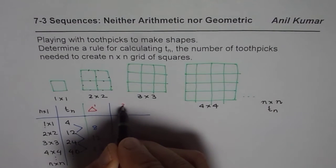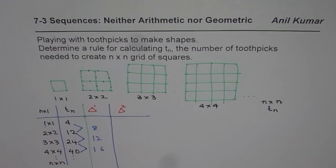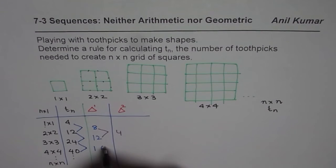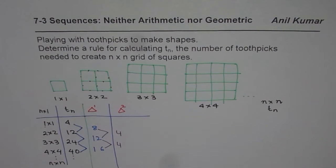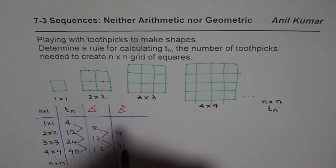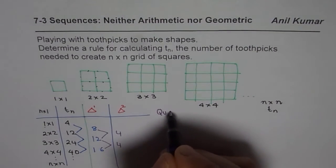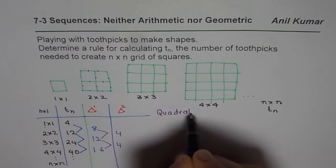Let us find the second difference. In case of the second difference, it is twelve minus eight which is four, and sixteen minus twelve is four. Second difference is constant. That means the relation which defines is quadratic. It is a quadratic relation.